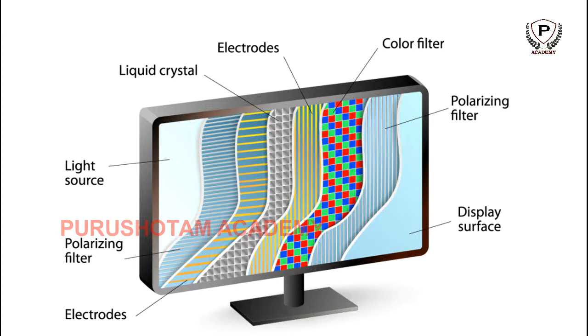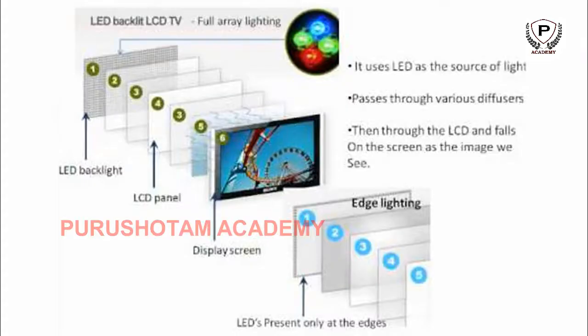First, LED TVs work with the color wheel or distinct RGB-colored lights — red, green, blue — to produce more realistic and sharper colors.